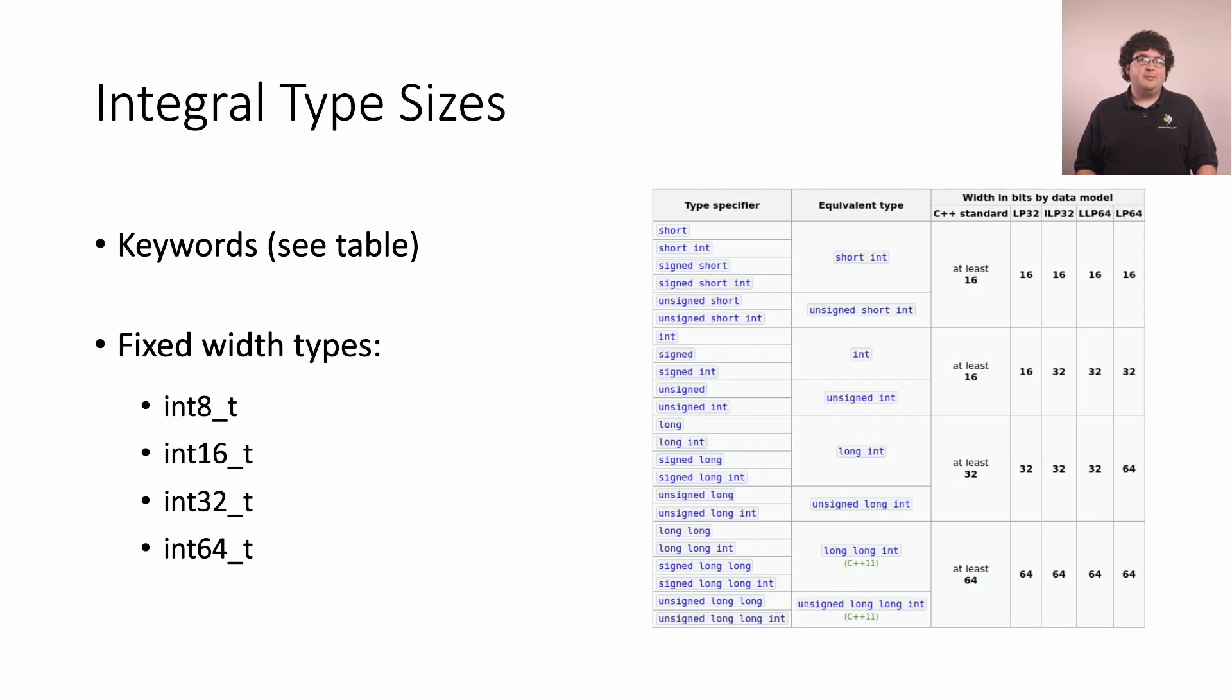The other way uses special type names that exactly specify the size of the type. Int8_t, for example, will use exactly 8 bits to store its value. These so-called fixed width types are generally preferred if you actually care about the size of your variables.